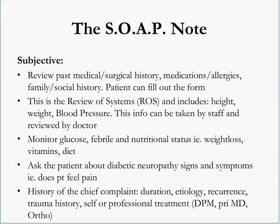There is also a part called the Review of Systems, the ROS, which includes height, weight, and blood pressure. The doctor's staff can take this information with the patient and the doctor can review it. It is important to monitor the glucose — asking the patient about their glucose level, documenting it in the chart if it's uncontrolled, and noting non-compliant diabetic patients. Ask them if they have a fever, if they are having an overwhelming infection, sepsis, or their response to infection. Ask about their nutrition, weight loss, if they are very frail and thin, if they are on supplements or vitamins, and how their diet is, as that will affect healing potential. This helps decide if you need to consult with a nutritionist to work on appetite and metabolism to affect healing.